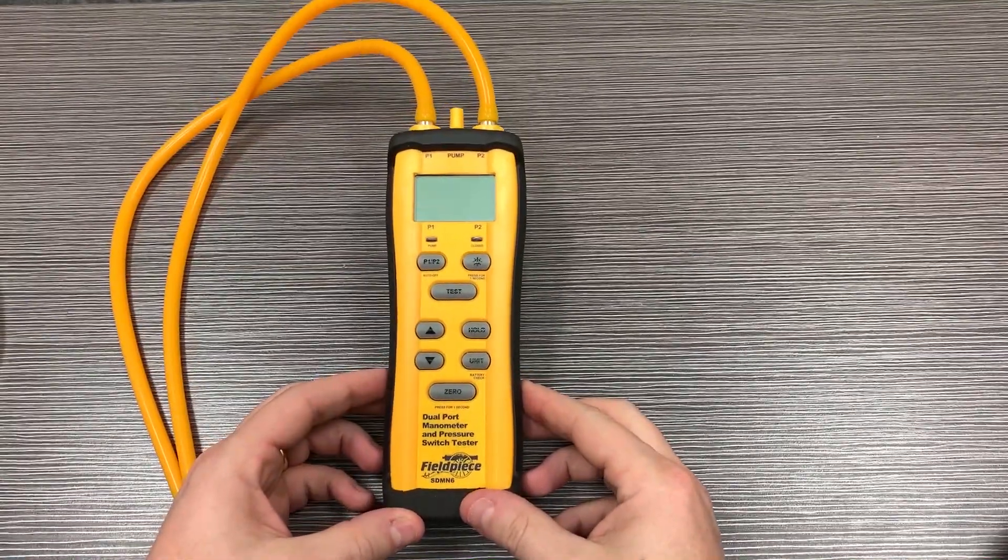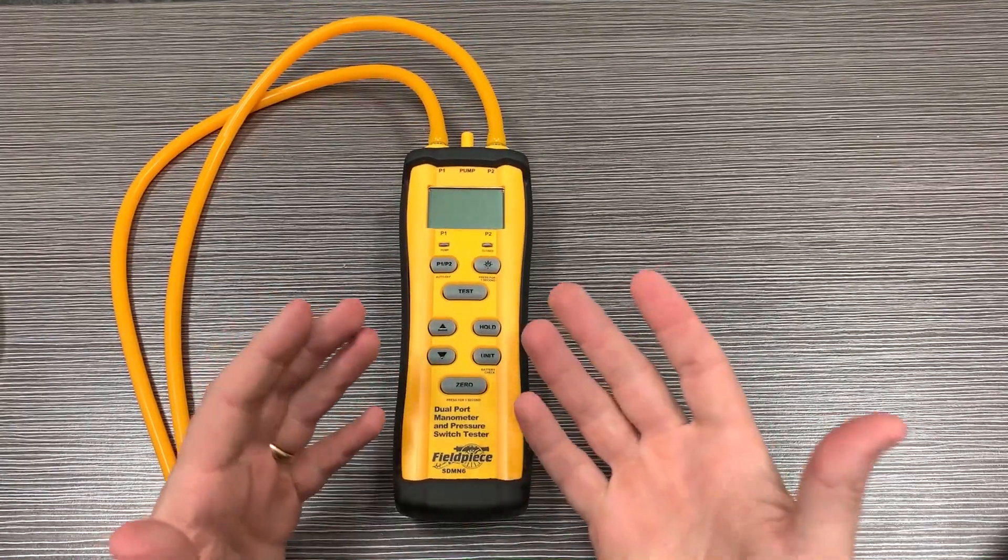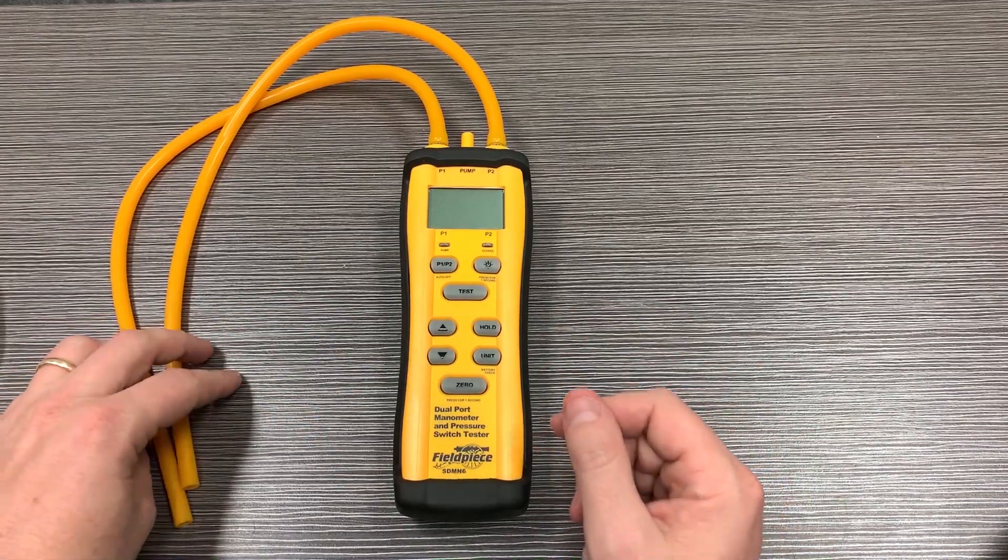Something that comes up a lot with manometers is confusion about what you're actually seeing displayed on the screen, because there's two different types of measurements.